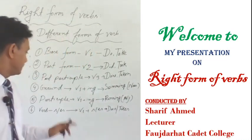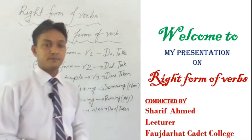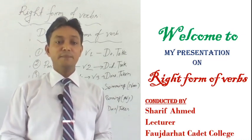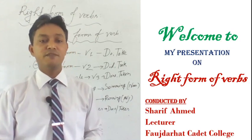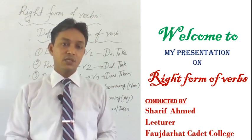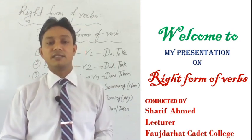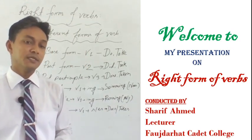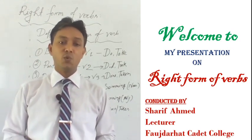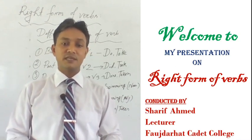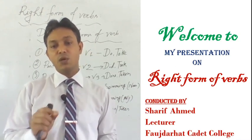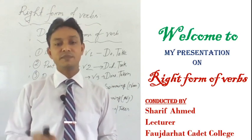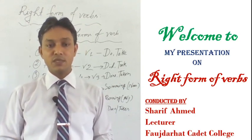Number four: gerund. If we add ING with the base form of the verb and that performs the function of a noun in a sentence, we call it a gerund — like 'swimming is my favorite hobby'. Here if I ask the question 'what is my favorite hobby?', the answer is 'swimming'. That means here the word 'swimming' is performing the function of a noun and also the subject of that particular sentence. That's why we call it a gerund.